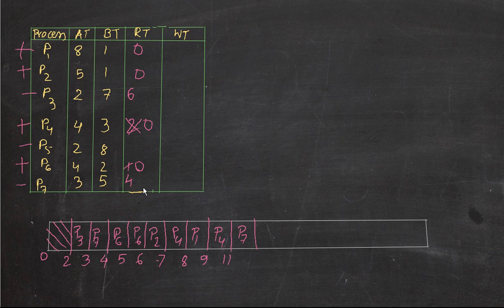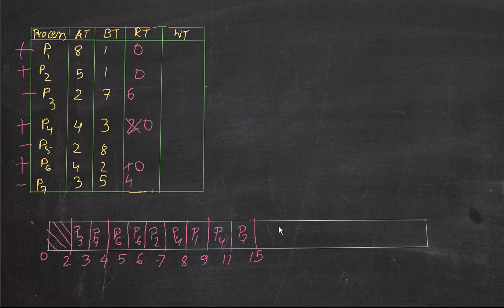P7 has the shortest remaining burst time of four seconds. We execute it fully because four is shorter than all others, and no new processes are arriving. P7 finishes at fifteen seconds. Then we execute P3, which takes six seconds: fifteen plus six equals twenty-one. Finally, P5 takes eight seconds: twenty-one plus eight equals twenty-nine. All processes are complete.